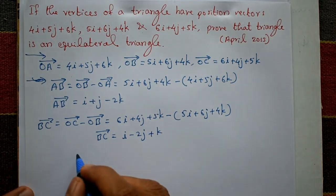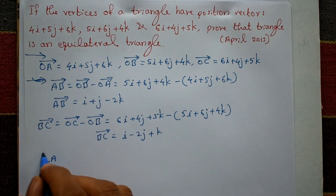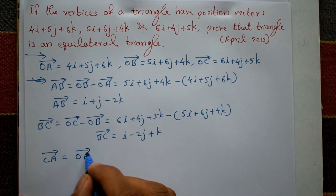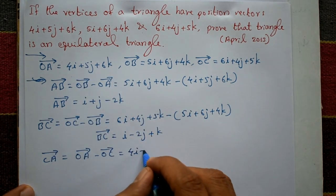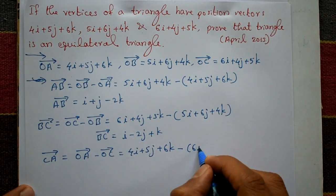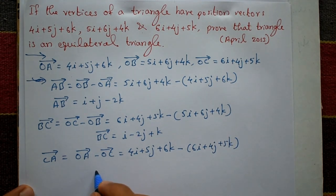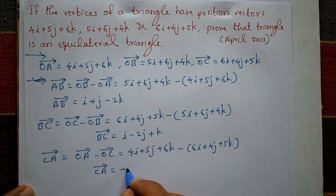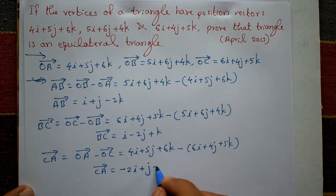The third one is vector CA, which equals OA minus OC. OA is 4i + 5j + 6k, minus OC which is 6i + 4j + 5k. So vector CA equals (4-6)i + (5-4)j + (6-5)k, giving -2i + j + k.